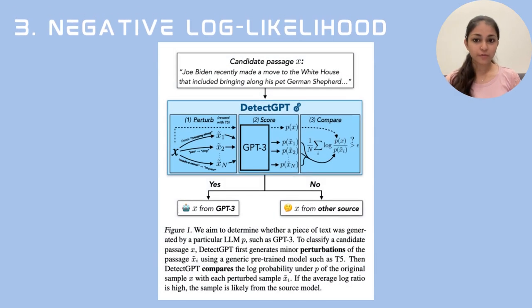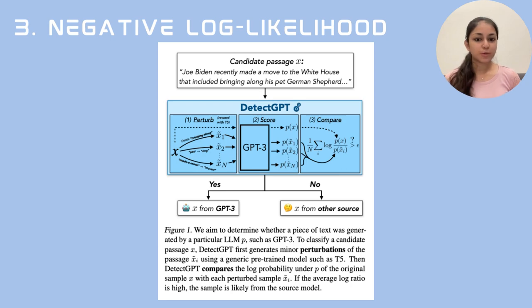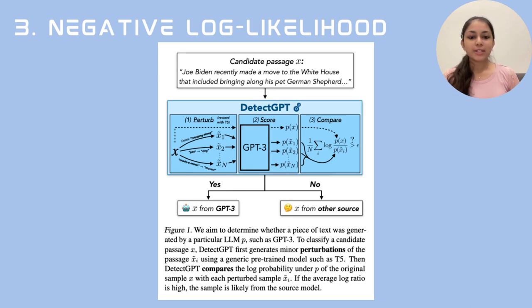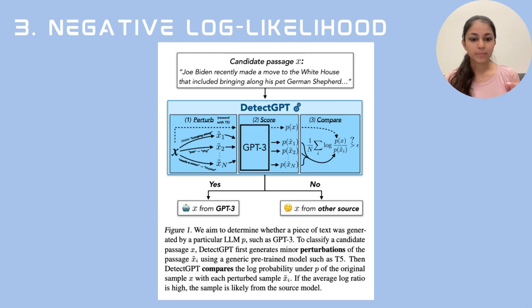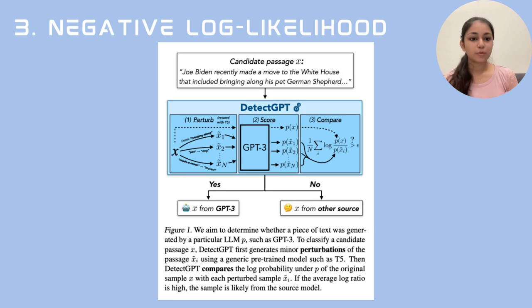For our next set of experiments, let us first understand how DetectGPT works. It only works for GPT-3, and even then it doesn't work very well. It first creates minor perturbations in the generated text, then compares the log probability of the original text with the perturbed sample. If the log ratio is high, then the sample is likely generated from the source model — in this case, GPT.